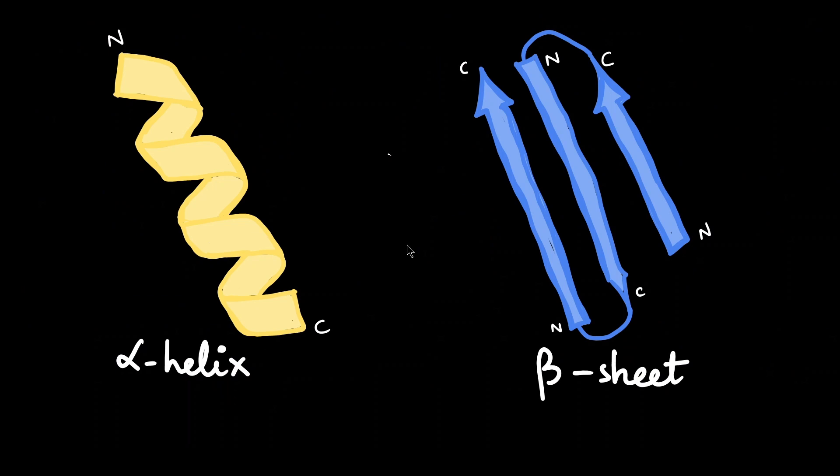This is how alpha helices and beta sheets are represented when they form bigger proteins. Many proteins contain regions of alpha helix and/or beta sheets in the same polypeptide chain itself. Secondary structures are usually very rigid and overall they give a fibrous shape to the protein. It's interesting to know that most of the structural proteins like actin, collagen, and keratin have secondary structure proteins within them.